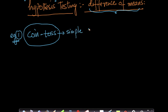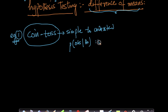The coin toss example was very simple because it was extremely easy for us to compute the probability of the observation given a null hypothesis. In the next case it will be slightly more complicated, and we'll learn various techniques of how to compute it. So let me tell you what the task is first.